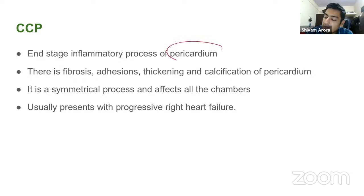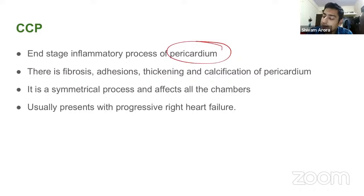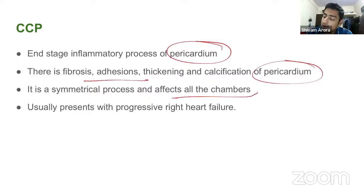Constrictive pericarditis is the end-stage inflammatory process of the pericardium in which a thick fibrous pericardium prevents the ventricles from stretching or relaxing during diastole. There is fibrosis, adhesions, thickening, and calcification of the pericardium. It is a symmetrical process affecting all chambers equally. It usually presents with progressive right heart failure because the constriction affects both ventricles, but decreased RV output means less blood reaches the left side, so signs of LV failure are generally absent.